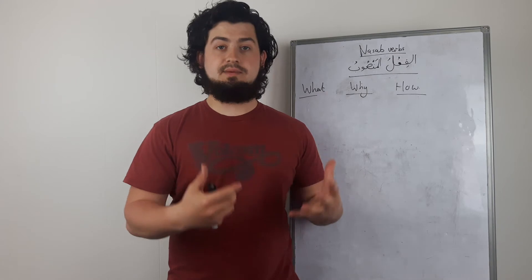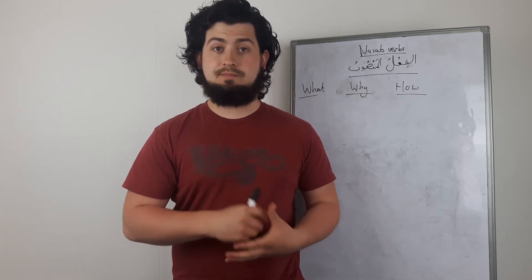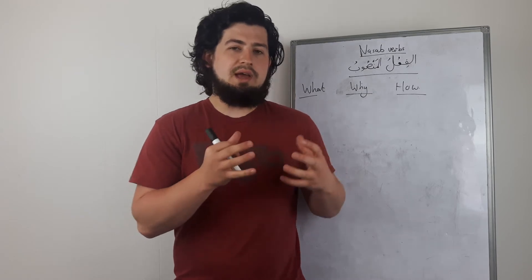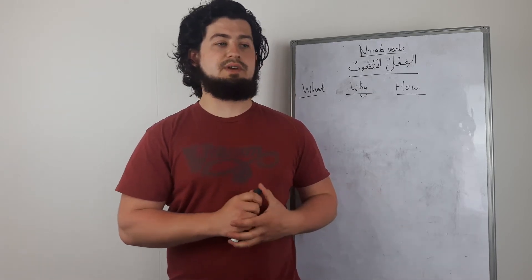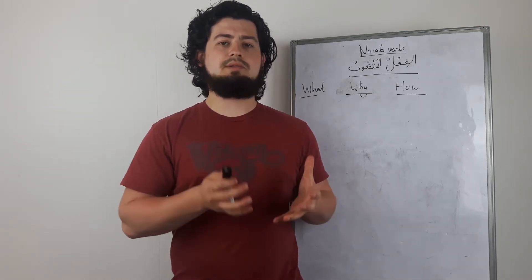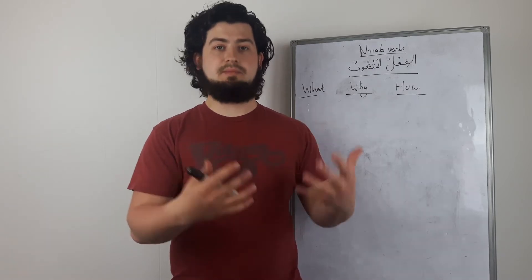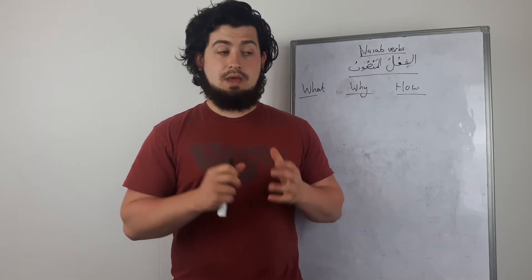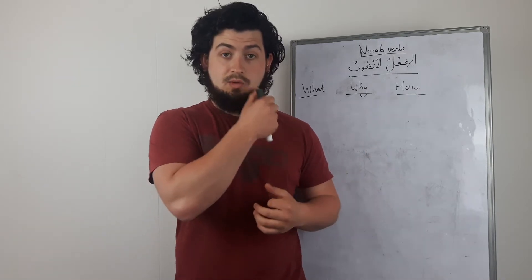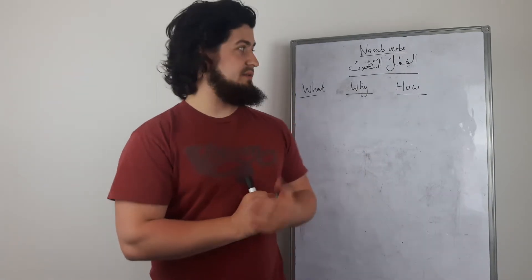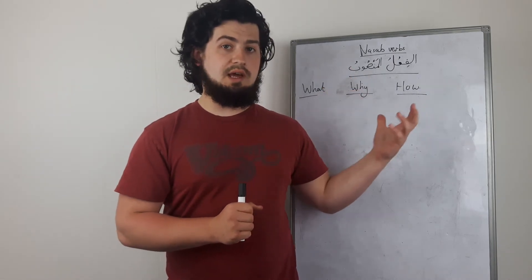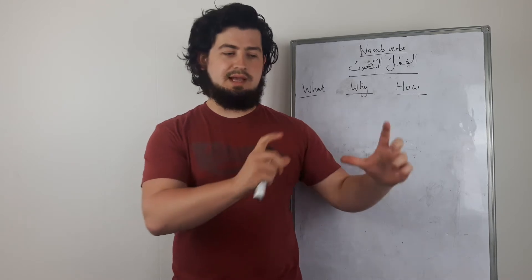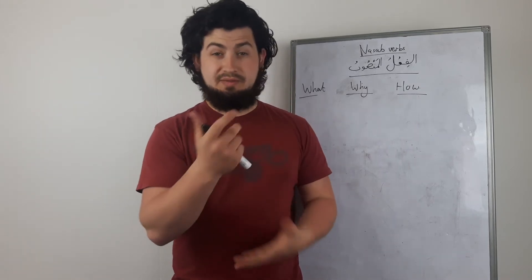In the last lesson we did what we call جزم verbs or الفعل المجزوم, and that is used for the negative past, as well as for imperatives, and for commands to yourself — like if you're saying 'let's do something' you say لنبدأ, and نبدأ in that case is a فعل المجزوم. So we covered that in the last lesson. What we're doing in this lesson is the last type of فعل المضارع — the last type of present tense conjugation of verbs that we're going to do in this little series.